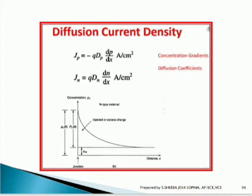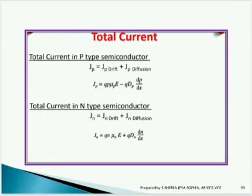In order to find the total current in both p-type and n-type semiconductors, we need to find both drift and diffusion current densities. That is, Jp equals Jp_drift plus Jp_diffusion, and Jn equals Jn_drift plus Jn_diffusion. Adding these values gives the total current density inside the semiconductor for both p-type and n-type.